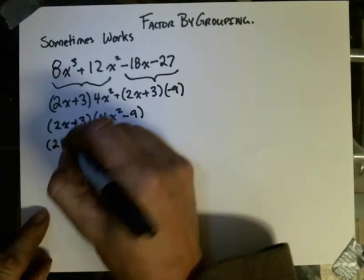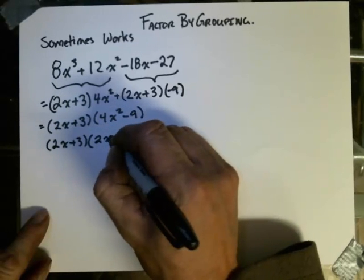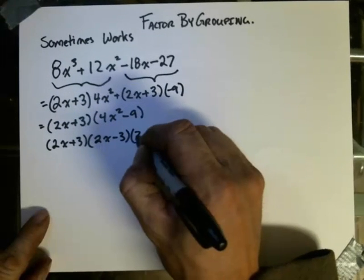And so to complete the factoring, 2x plus 3, and this is 2x minus 3, and 2x plus 3.